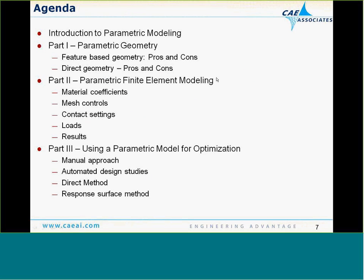Today we'll give you a brief introduction to parametric modeling using ANSYS finite element tools in conjunction with various geometry modelers, then start part one covering different types of parametric geometry. We'll discuss feature-based geometry, its pros and cons, and then cover direct-based geometry using SpaceClaim Direct Modeler. In about a month we'll follow up with part two, focusing on setting up the parametric finite element model in Mechanical. Part three will cover design studies and automatic optimization using the parameter set and design explorer tools within the workbench environment.